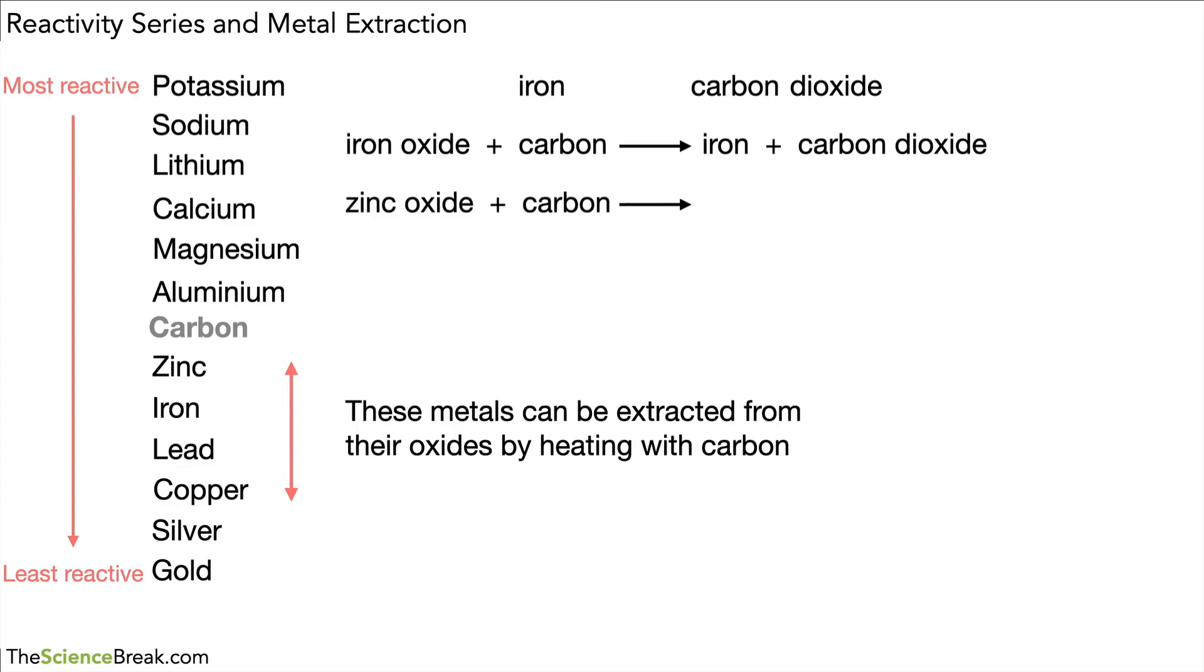Let's take a look at another example, zinc oxide plus carbon. What's going to happen here? Well if we look, there's carbon on our reactivity series and zinc is below it so carbon is more reactive. That means the carbon will remove the oxide, the oxygen, from the zinc oxide. So we have zinc plus carbon dioxide.